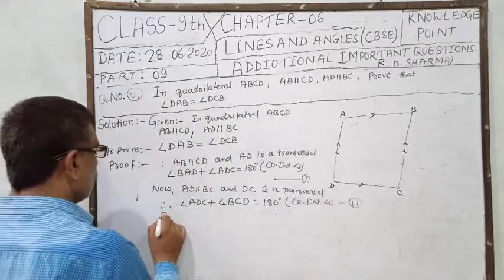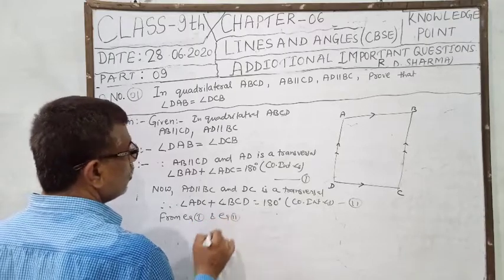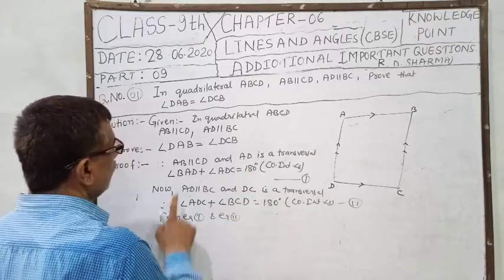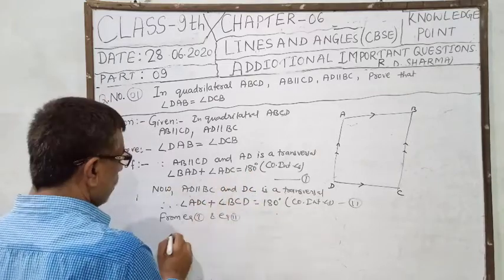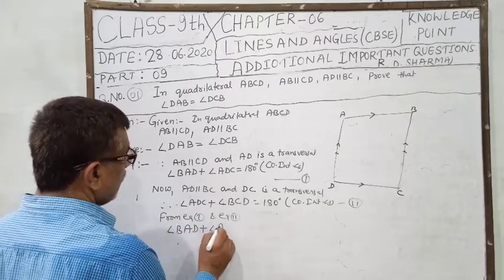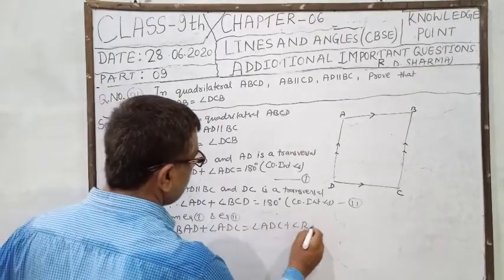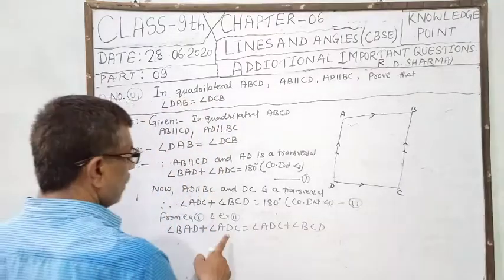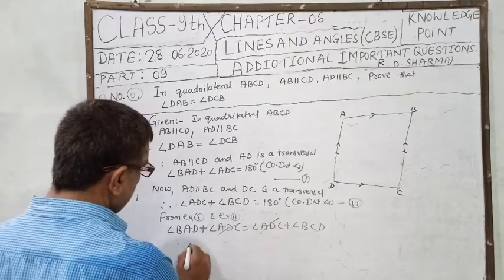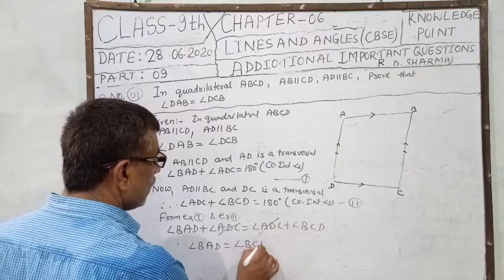From equation 1 and equation 2, you see 180 degrees, 180 degrees, both have right side equal. Therefore, there will be left side also equal. So you can write angle BAD plus angle ADC equal to angle ADC plus angle BCD. Now cancel ADC, ADC. What happens? Angle BAD is equal to angle BCD.